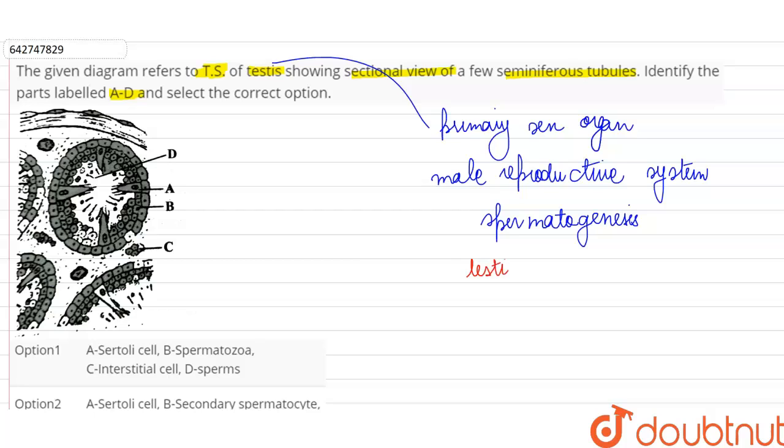So inside the testis, in each oval testis, there are some compartments which we are going to call the testicular lobules. Inside these testicular lobules, inside each lobule we are going to find two to three highly coiled structures known as the seminiferous tubules inside which spermatogenesis is going to take place. We can see these tubular structures in a transverse section over here.